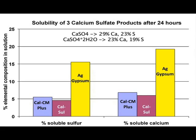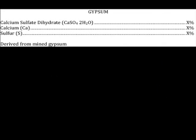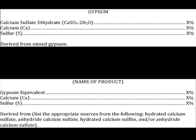Now let's look at some of the labeling issues surrounding these two types of calcium sulfate products and how it's handled in California. For California, if a product is gypsum or calcium sulfate dihydrate based, the label will say 'gypsum' somewhere, list 'calcium sulfate dihydrate,' and state it's derived from mined gypsum. Any anhydrite product will not say 'gypsum' — it will say 'gypsum equivalent' and list the derived materials.